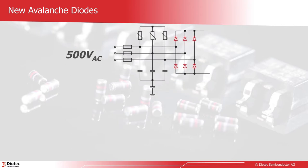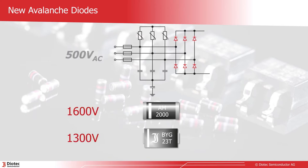Diotec offers two new devices fitting perfectly to these requirements. The AN2000 in MELF and the BYG23T in SMA. With 1,600, respectively 1,300 volts, their reverse characteristic is well above the clamping voltage of common varistors.